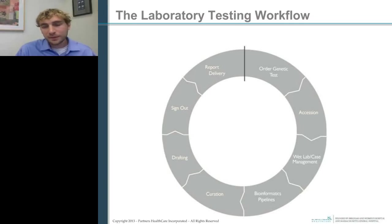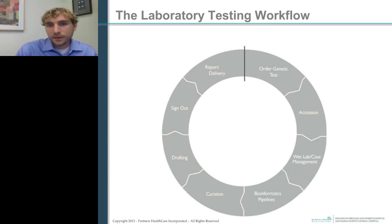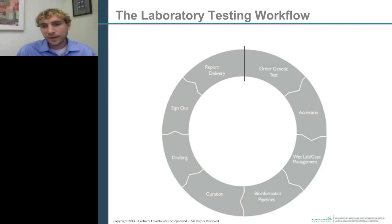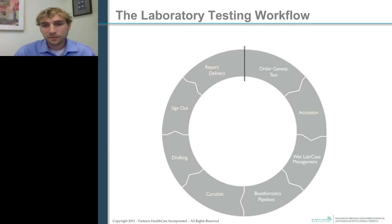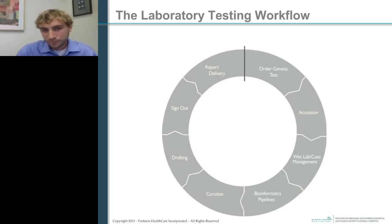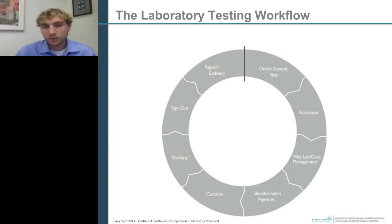In general, the laboratory testing workflow is something I'm sure all of you are fairly familiar with. A test will be ordered by the doctor and the genetic counselor. The case will come into the laboratory, it'll be accessioned, and DNA or RNA will be extracted depending on what test is being ordered. There will be wet lab processing, the technical component of the assay, case management, and bioinformatics processes. The variants identified would be pulled out and curated by experts — fellows, genetic counselors, variant scientists, geneticists, pathologists — and the case would be drafted, signed out, and the report delivered back to the clinician.